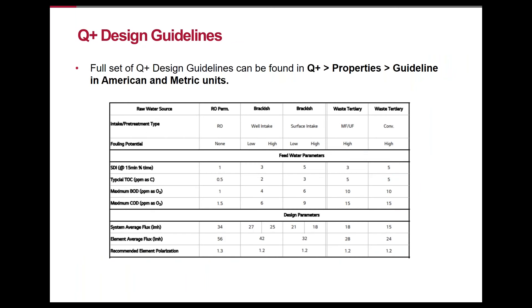Within our Q-plus software is a set of RO design guidelines where a user can select their units — metric or American — and drill down by water type to determine our recommended range of average flux, system recovery, and expected feed water parameters. This file is a useful jumping-off point when beginning the design process. Each water profile is unique and requires iteration to determine an optimal design, but we recommend starting here when using Q-plus, especially if you're new to the software. When we move into our design exercises on the next slide, I will be referencing this slide fairly often so we can get an idea of how to use it during the design process.